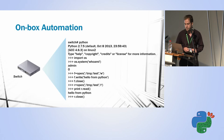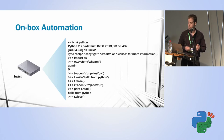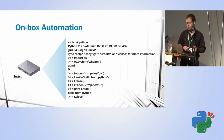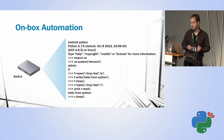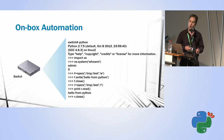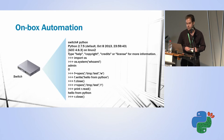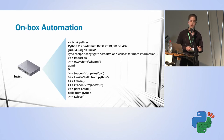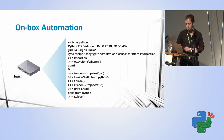There are two problems with on-box automation. First, I need the device to support the scripting language — if I want to write the script in Python, I need the device to support Python, and not all network devices today support it. Second, if I want to run the same script on each device in my network, I need to load and maintain that script on each individual device.